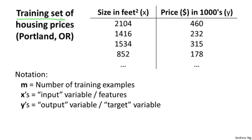Let's define some notation that we're using throughout this course. I'm going to define quite a lot of symbols. It's okay if you don't remember all the symbols right now, but as the course progresses, it'll be useful to have convenient notation. I'm going to use lowercase m throughout this course to denote the number of training examples. In this dataset, if I have 47 rows in this table, then I have 47 training examples and m equals 47.